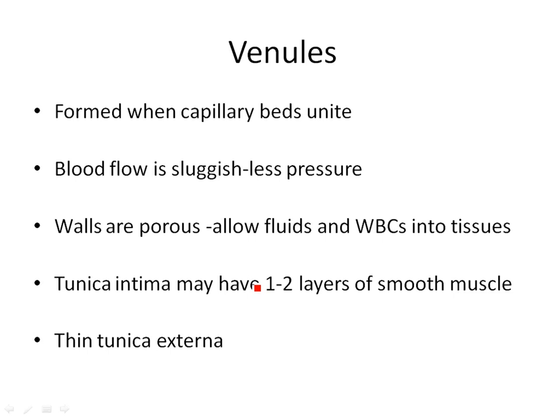When you leave the capillary system, you move into the venous system. The smallest veins are called venules — vessels formed when capillaries start uniting to form a larger vessel. Blood flow in these vessels is very slow, and you actually have external forces that help push the blood back towards the heart. The walls of these vessels are very porous, so you can have white blood cells and fluids leaving through these venules, similar to what you might have in capillaries. When white blood cells squeeze out of vessels, we call that diapedesis, and it's important when you have inflammation in tissues.